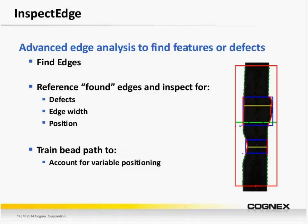Now let's talk about each of these tools. First, InspectEdge. As the image on the right shows, InspectEdge is used to very precisely find an edge. It differs from a traditional edge-finding tool in a few ways. First, it utilizes several overlapping caliper tools to achieve a high level of subpixel precision. Second, because it uses dozens of very short caliper tools, it can easily handle nonlinear edges. So even aside from a defect inspection application, it's a very reliable tool for detecting edges with a high degree of precision.